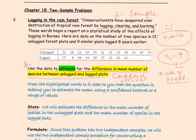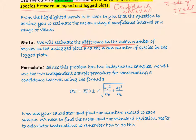The first step in problem solving is to make a clear statement about what exactly we're going to do. The statement should read: we will estimate the difference in the mean number of species. When we do a two-sample procedure, we calculate the difference in the mean number of species in the unlogged plots and the mean number of species in the logged plots — find two different means and then find the difference.